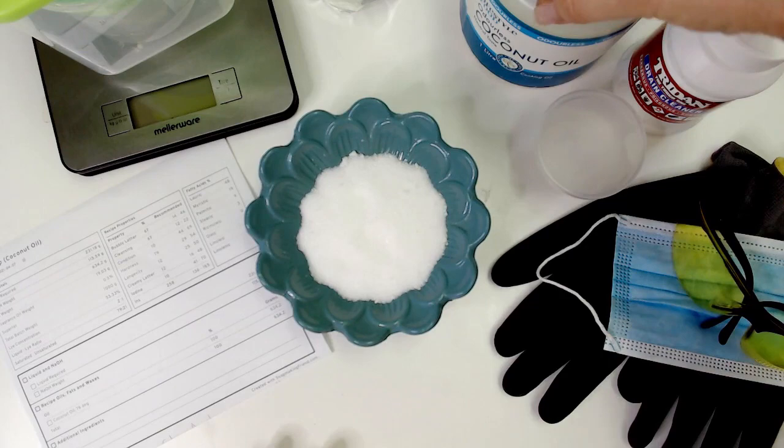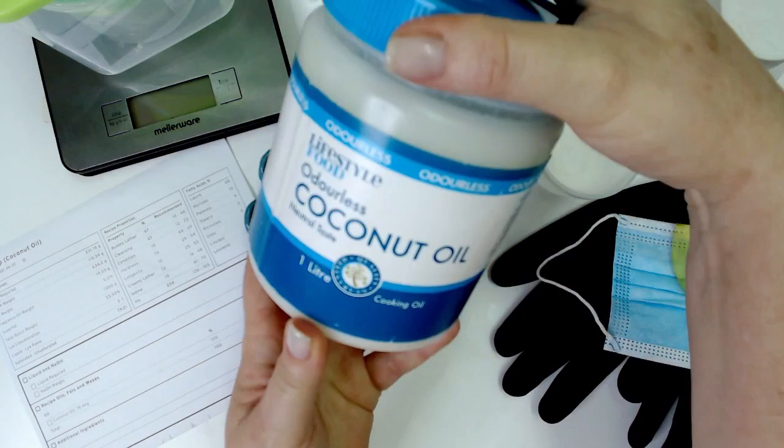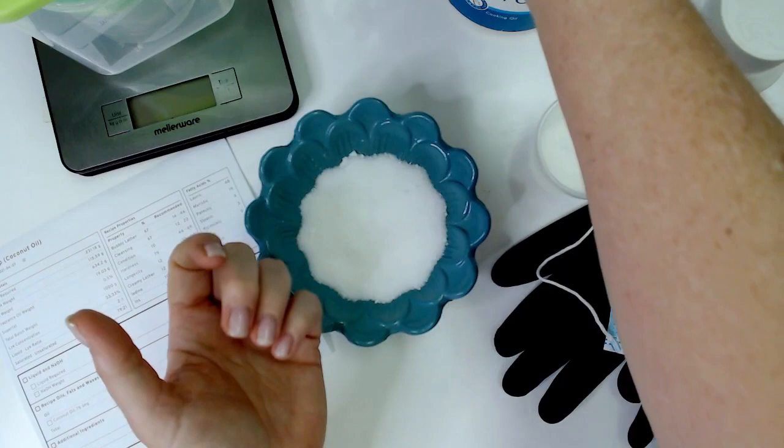For today's soap, it's going to be a dish soap. I'm going to use 100% coconut oil, so it's going to be a single oil soap this time. I'm going to use distilled water, obviously my caustic soda, and then our lovely citric acid.